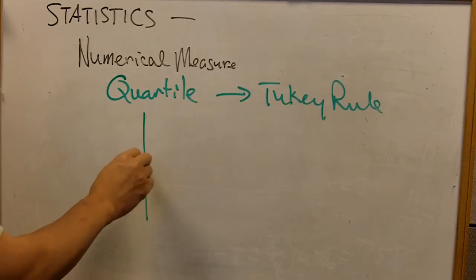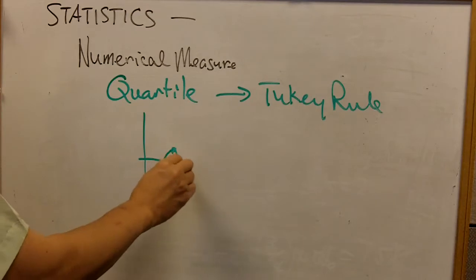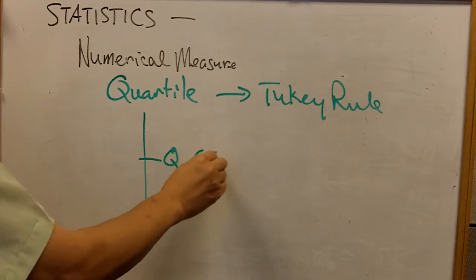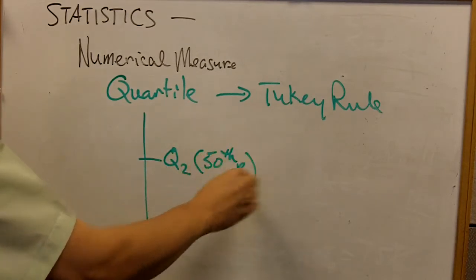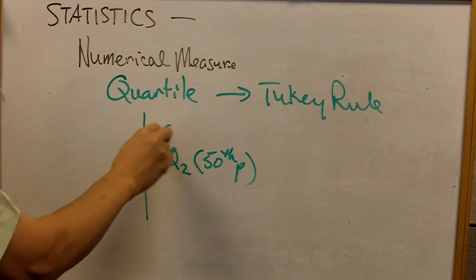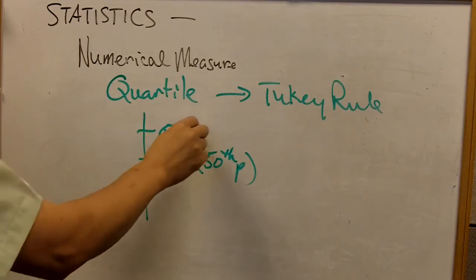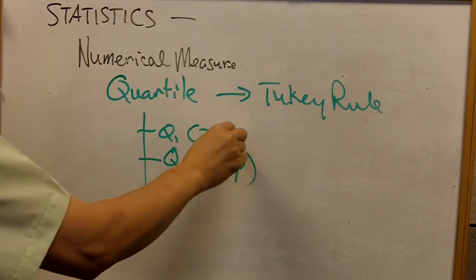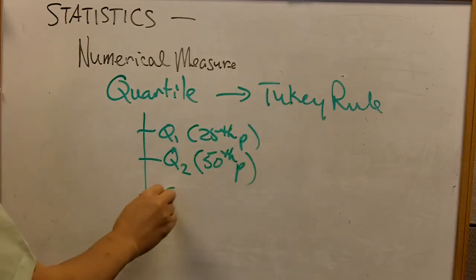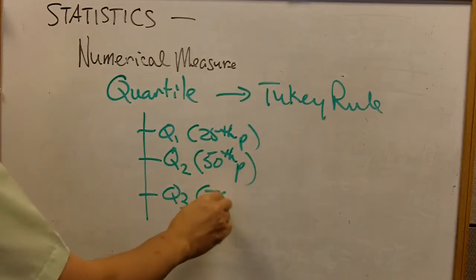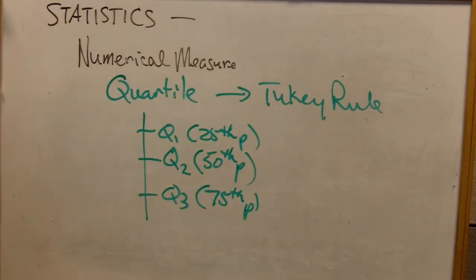So we have the second quartile, Q2, which is the same as the 50th percentile. Then we have the first quartile, which is the 25th percentile, and then we have the third quartile, that is the 75th percentile. So that should not be too difficult to understand.